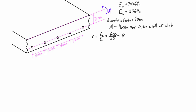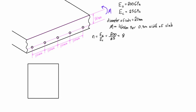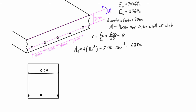We're looking at four kilonewton meters per 0.3 meters width of slab, so we analyze a cross section of that width. We have one full steel rod and two half rods at the edges, so the number of steel rods per 0.3 meters is two. The area of steel is two times π r squared, giving us 628 millimeters squared per 0.3 meters.